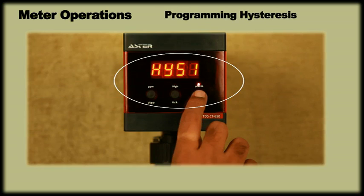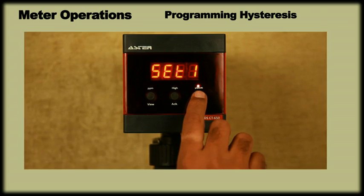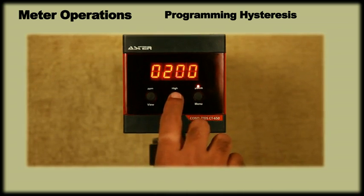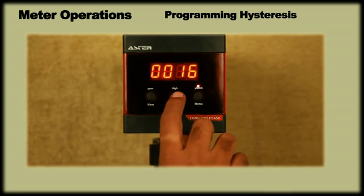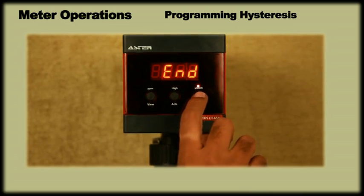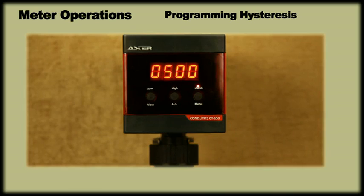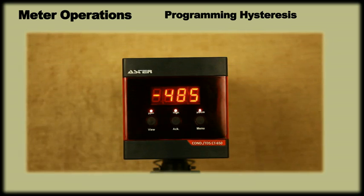After setting the set point, the display will show hysteresis. Hysteresis is basically the percentage value of the set point for which the relay will not reset after getting energized. For instance, if our set point is at 500 and the hysteresis value is set at 10%, then the relay will get energized the moment conductivity exceeds 500 and remain energized until the value goes down to 450, which is 10% less of the set point value.